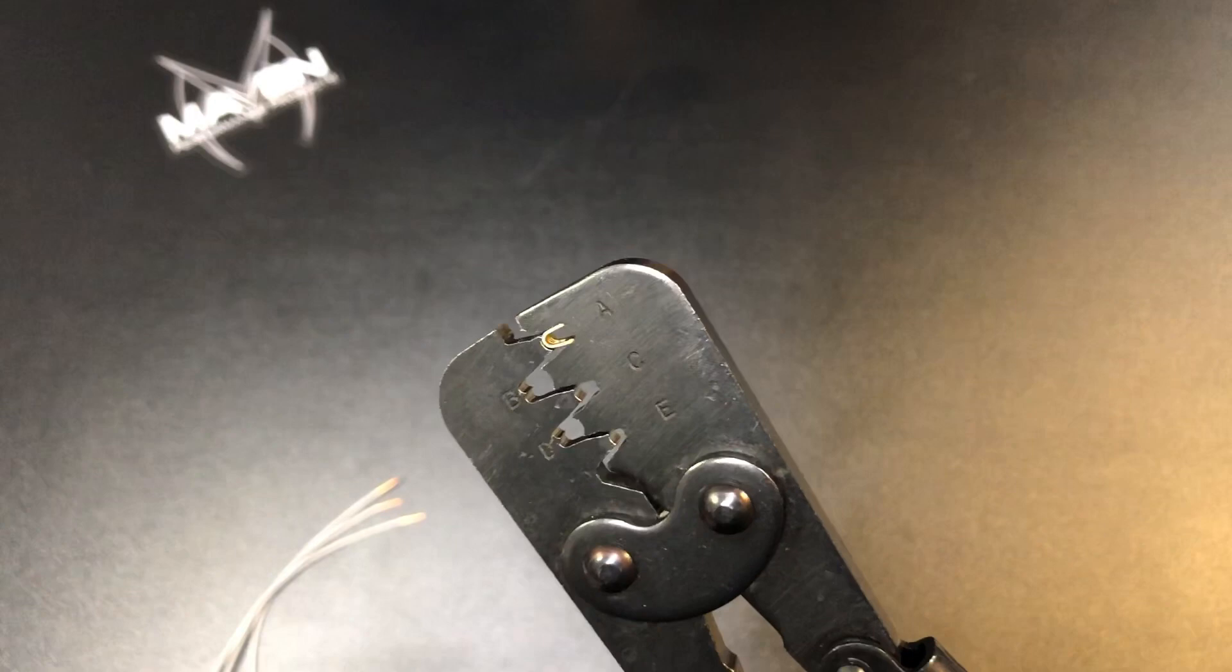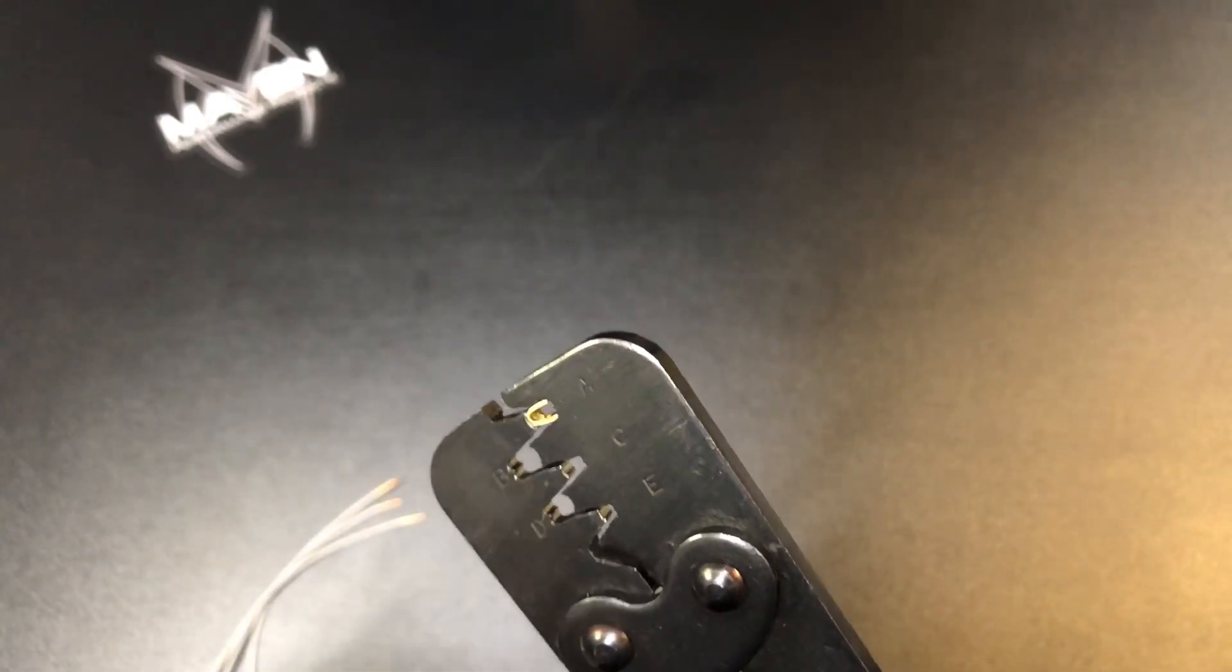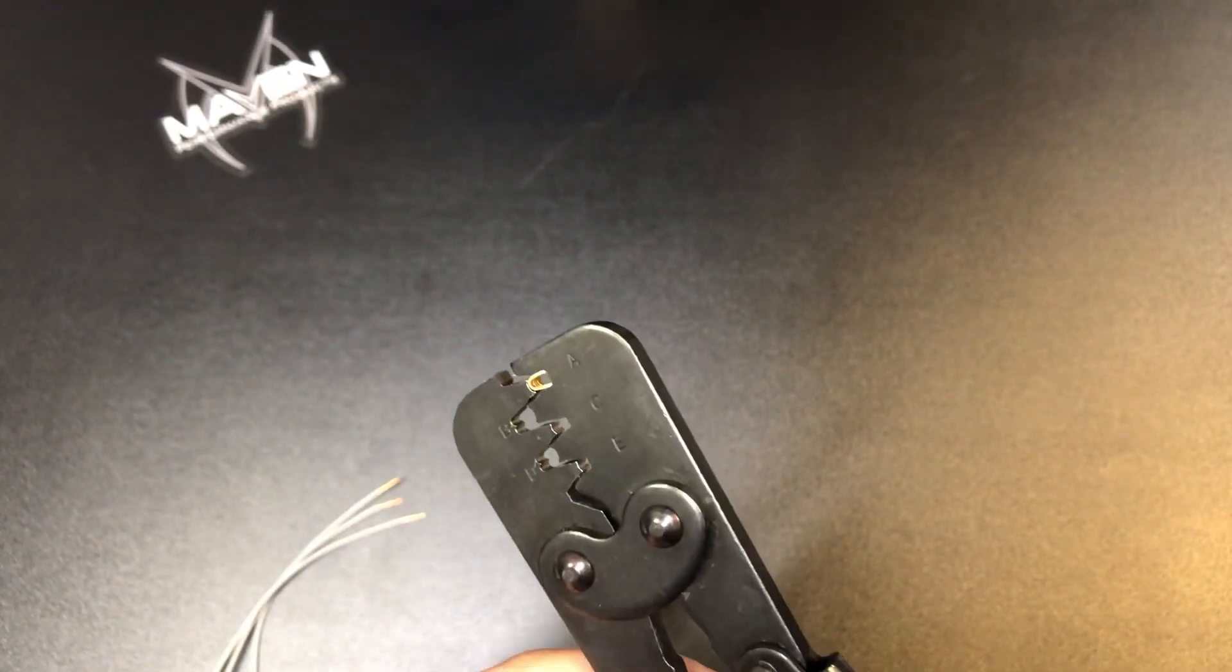Now we're going to be looking for the crimp to fold all the way over and kind of roll over on top of itself. So I'll show you what that looks like here. Let me get set up here to get these three wires crimped.